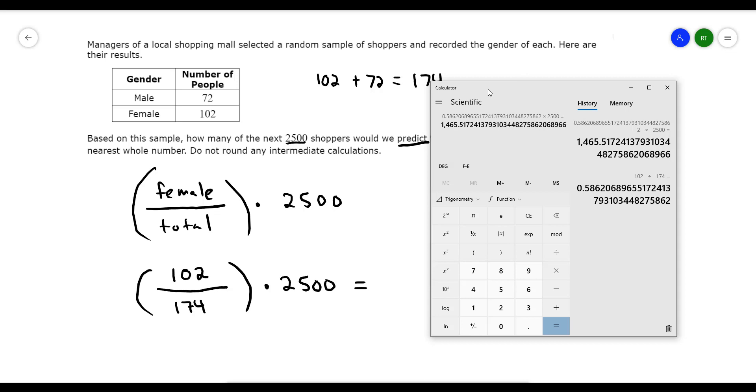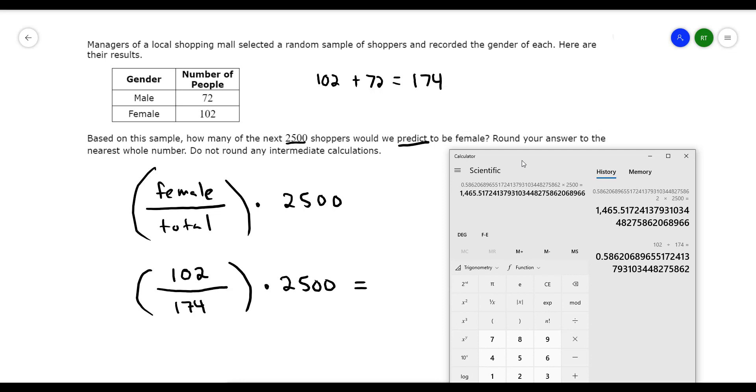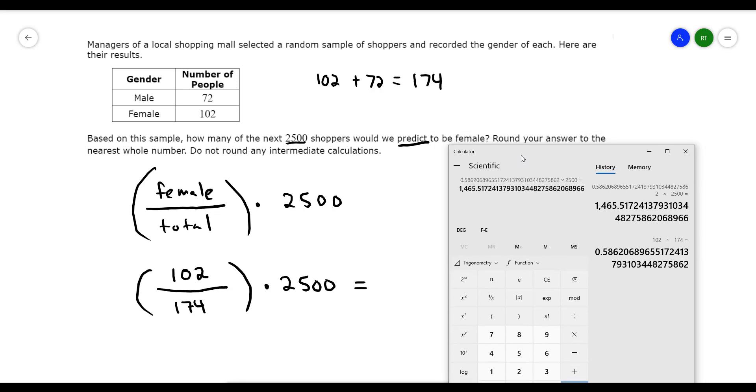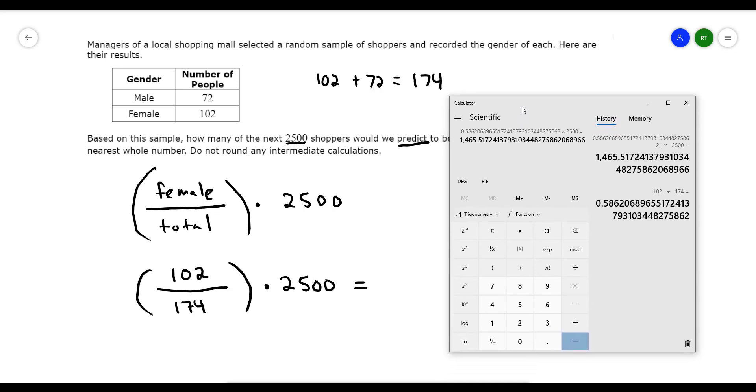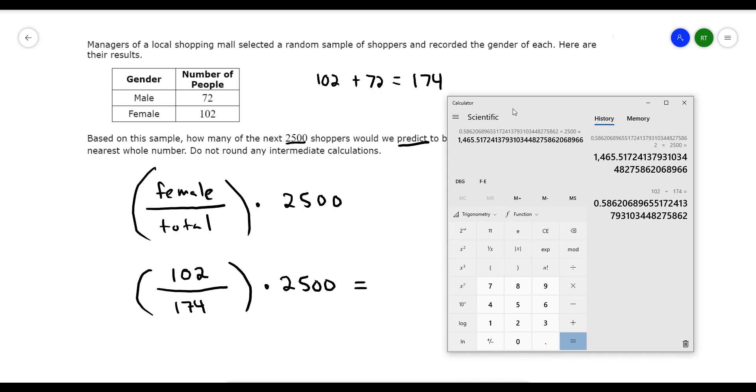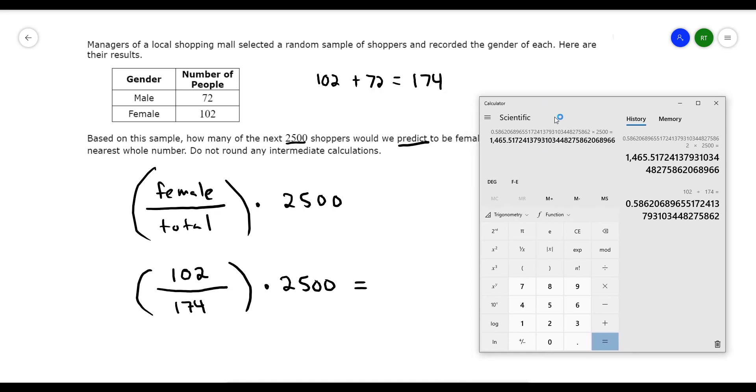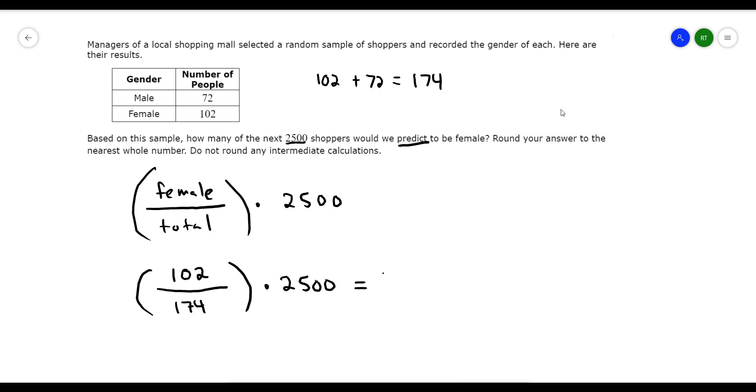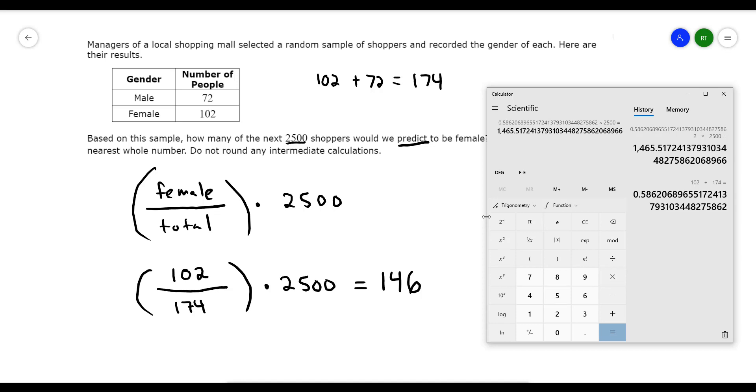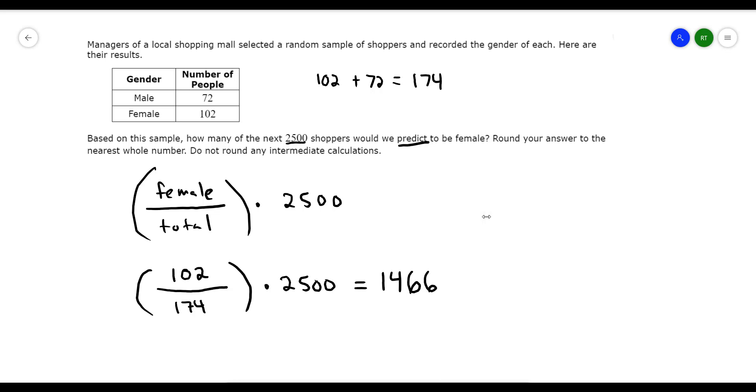So don't round any intermediate calculations, it says, but they want us to round to the nearest whole number. So when they say don't round to intermediate, it just means don't round until the very end, which we are at right now. So rounding it to the nearest whole number is going to be 1,465.5. So remember, if your number is five or more, then you're going to round it up once. So it's going to be 1,466. That's how many people we predict are going to be female out of our sample of 2,500 shoppers.